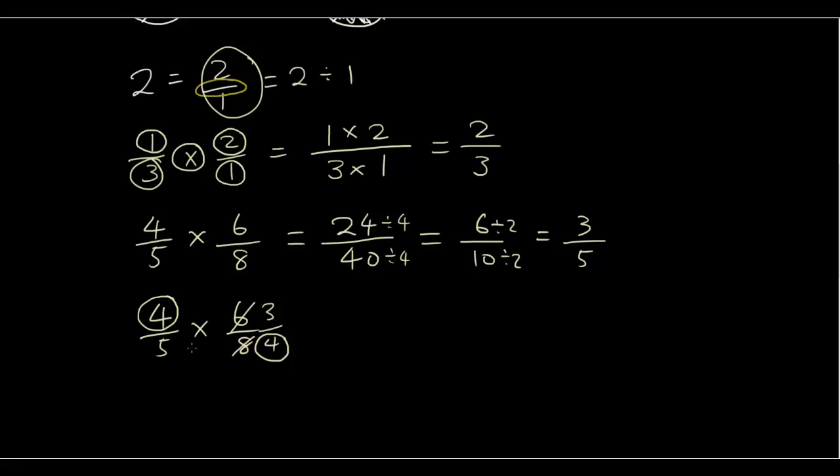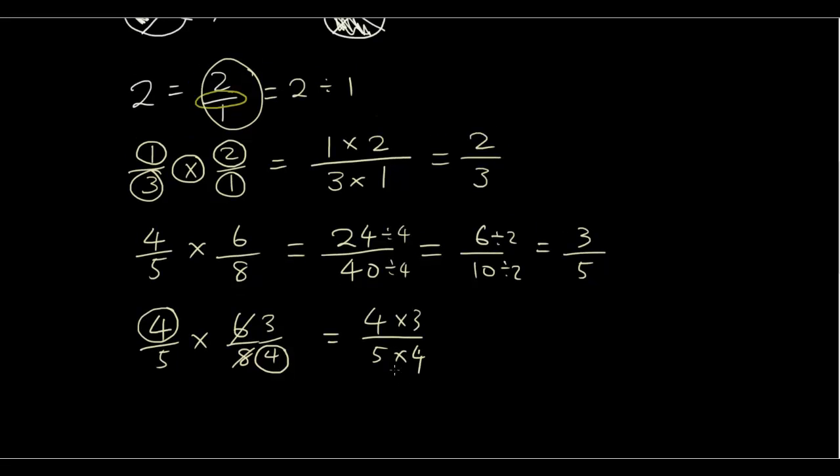Now when you're multiplying, it actually doesn't matter if the numbers are on either of the fractions, simply because when you're multiplying, you're going to combine them anyway. So it's going to end up as 4 times 3 over 5 times 4. And you can rewrite the order as 4 times 3 over 4 times 5, because with multiplication, it doesn't matter if it's 5 times 4 or 4 times 5, it gives you the same answer.